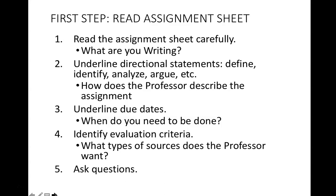Underline the due dates — when do you need stuff to be done? Finally, identify the evaluation criteria. What types of sources — usually from the list we just talked about — does the professor want you to use? Peer-reviewed sources? Sources from the database? Sources from the web? Sources from the library? Do they list a series of journals you must look at? Ask yourself what types of sources you can use to create your research.